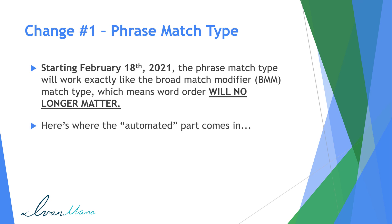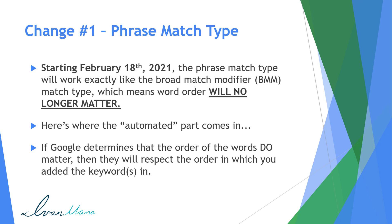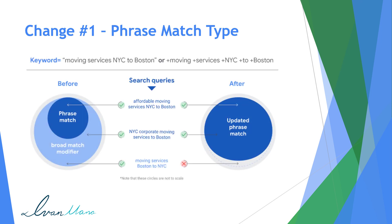So this is where the automated part comes in. Because if Google determines that the order of the words does matter, then they will respect the order in which you add the keywords in. So what they will not do is — if the order does matter — Google will not show your ads to people writing something in the opposite order. So let me explain this in more detail with an example. Here's an illustration. We have the keyword at the top saying 'moving services NYC to Boston' as phrase or broad match modifier, which are now the exact same thing.